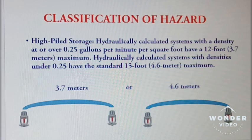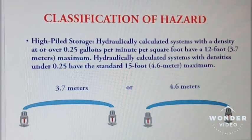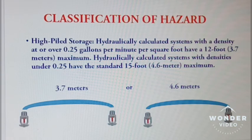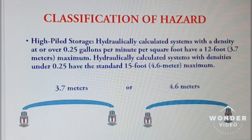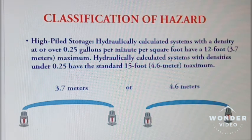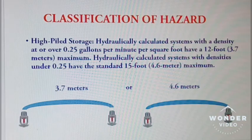High pipe storage: hydraulically calculated systems with a density at or over 0.25 gallons per minute per square foot have a 12 foot, equivalent to 3.7 meters, maximum spacing. Hydraulically calculated systems with densities under 0.25 have the standard 15 feet, equivalent to 4.6 meters, of maximum spacing between them.